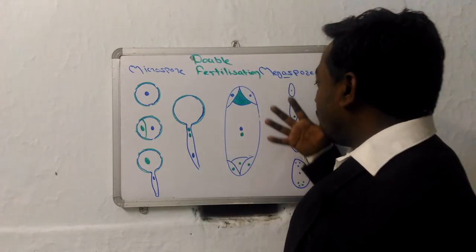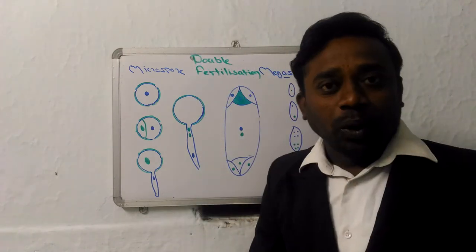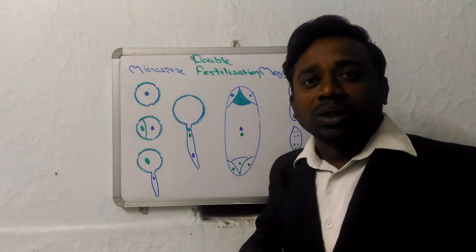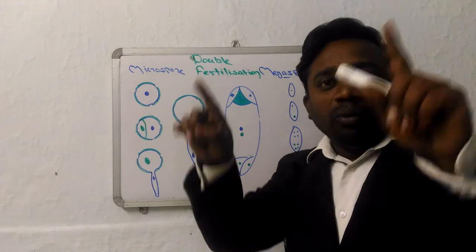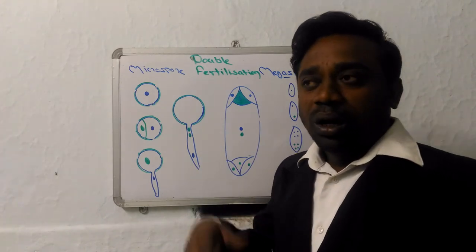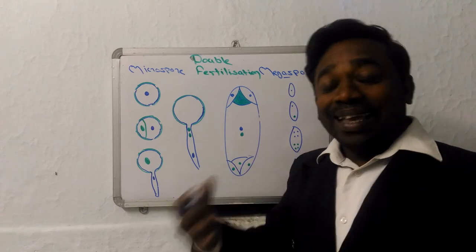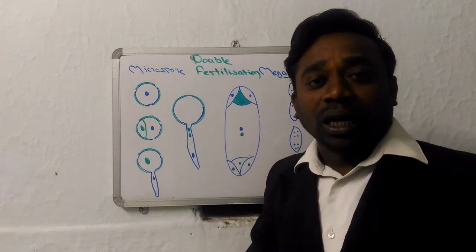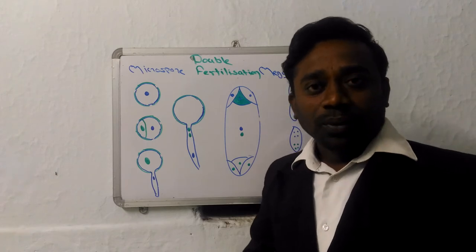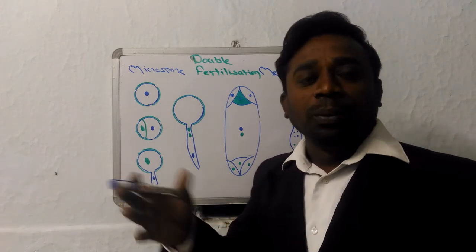Now about female gametes, that's megaspore. These megaspores are produced in ovule. In ovule, we have micropyle, we have nucellus. Nucellus is the tissue in which we have soft tissues. In the nucellus itself, one of the hypodermal cells acts as archesporium, which acts as a megaspore mother cell.